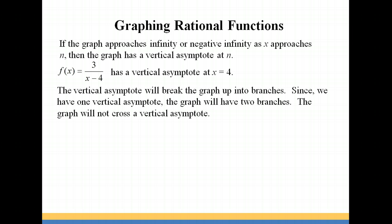If you have a vertical asymptote on your graph, it will break it up into branches. In this case, we have one vertical asymptote, so we will have two branches of our graph. Your graph will never cross a vertical asymptote.